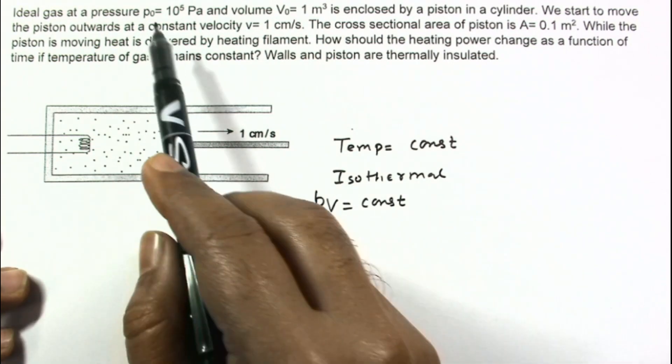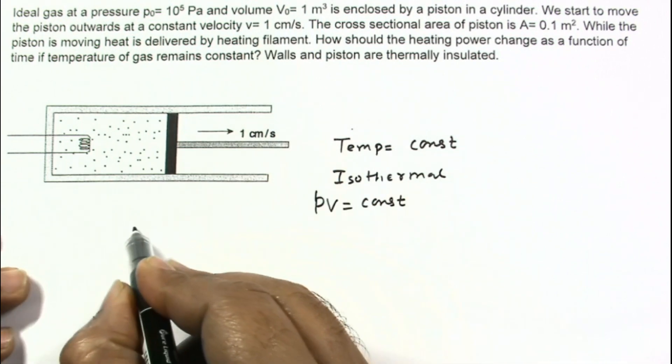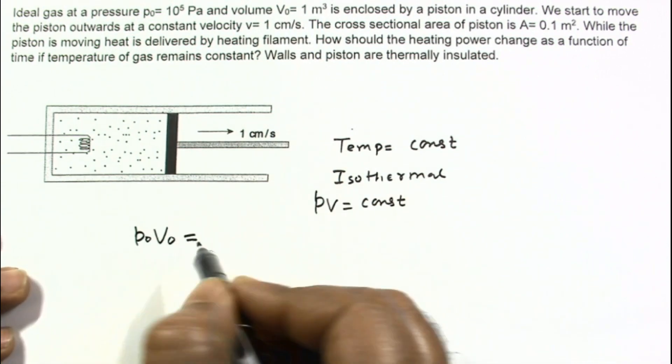Initially pressures are P0 and V0, so P0 V0 this would be equal to,